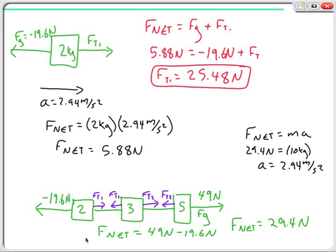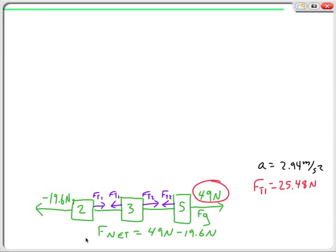Now what I'm going to do is I'm going to go in and I could isolate either the 3 block or the 5 block. I'm going to isolate the 5 block, I think, because I want to take advantage of this nice round number in the 49. All right, I've gotten rid of that, and now let's draw a free body diagram for the 5 kilogram block.